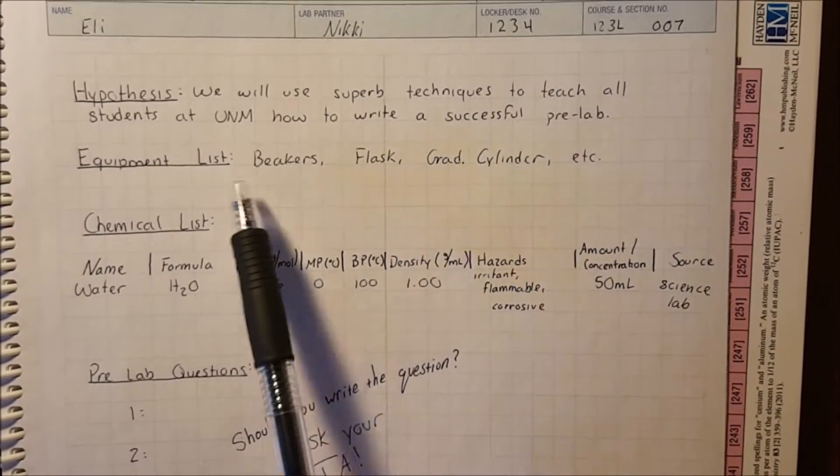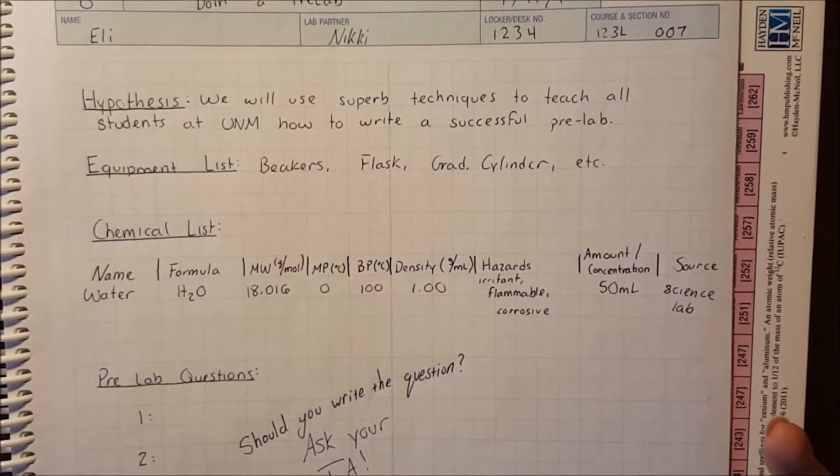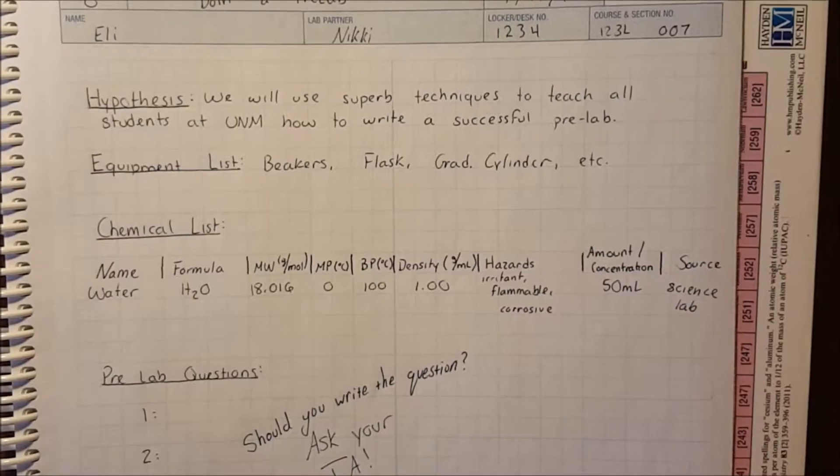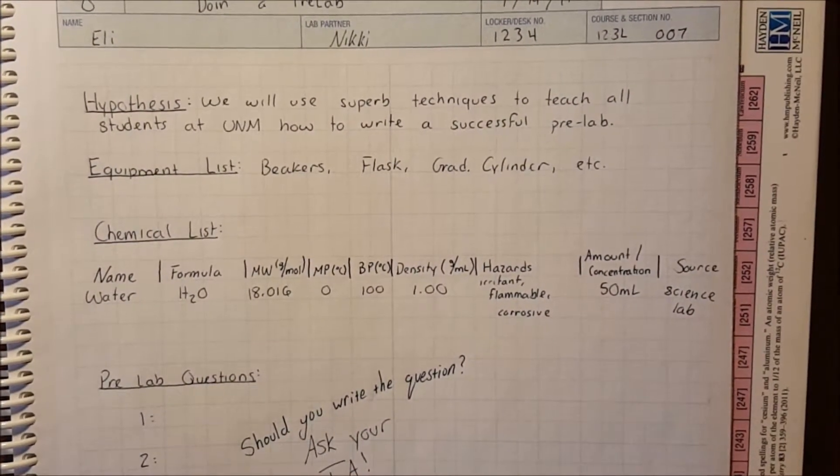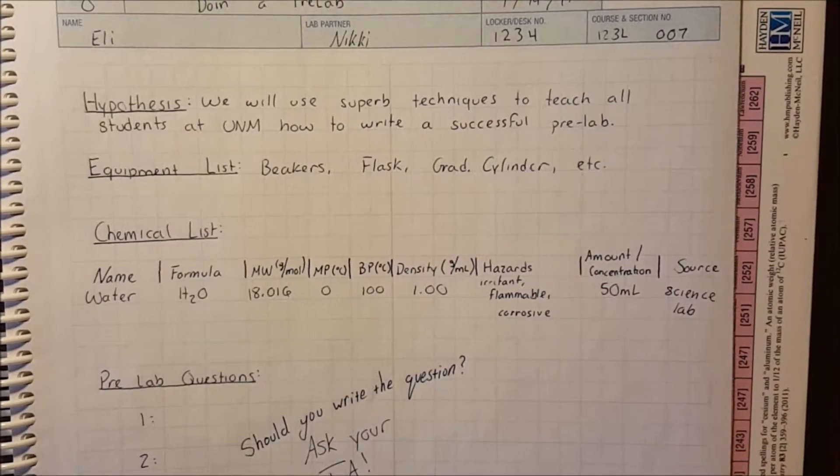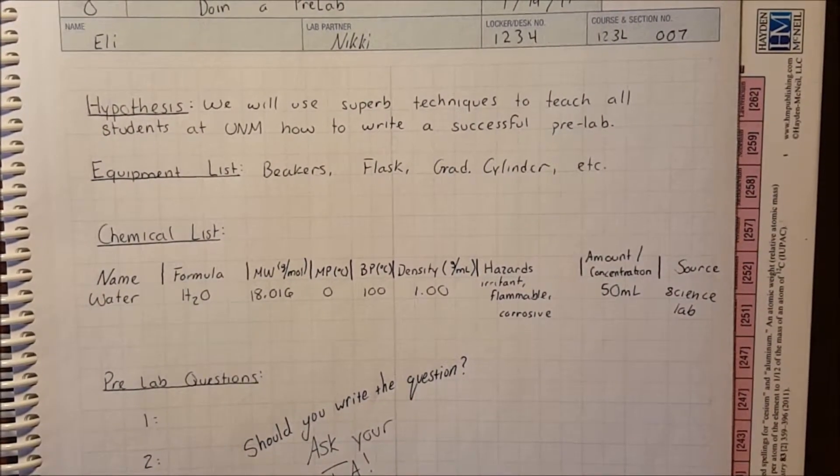After this, you have your equipment list. Here's where you'll write out the various things you will need to use to complete the experiment, such as weigh boats, beakers, flasks, graduated cylinders, etc. You'll find this information in your lab manual and also on the videos that you have on Blackboard. This will help you prepare before lab.